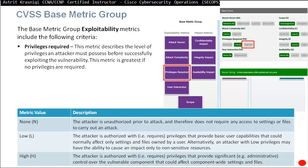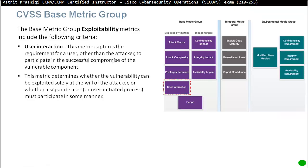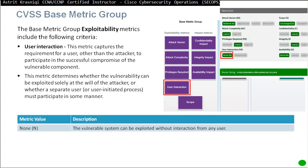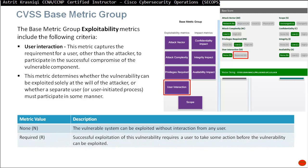High privileges required means the attacker is authorized with privileges that provide significant — i.e., administrative — control over the vulnerable component, affecting component-wide settings and files. Then we have user interaction. This metric captures the requirements for a user other than the attacker to participate in a successful compromise. It determines whether the vulnerability can be exploited solely at the attacker's will or whether a separate user must participate: None — no user interaction needed — or Required — a user must take some action before the vulnerability can be exploited.